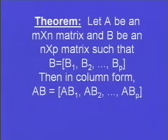Now we have a theorem. Let A be an M by N matrix and B be an N by P matrix such that B is equal to B1, B2, etc., up to Bp. Then in column form, A times B is equal to A times B1, A times B2, etc., up to A times Bp.